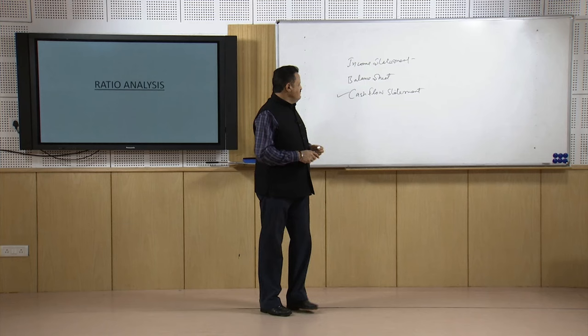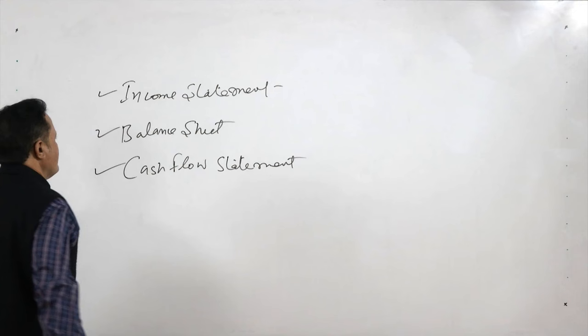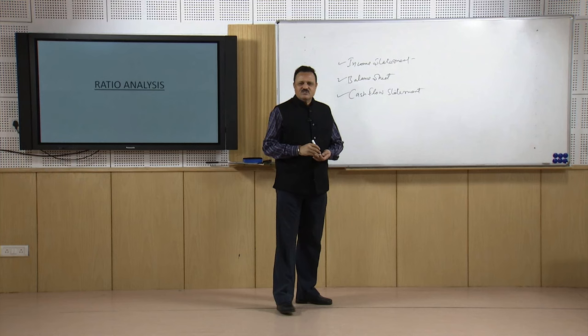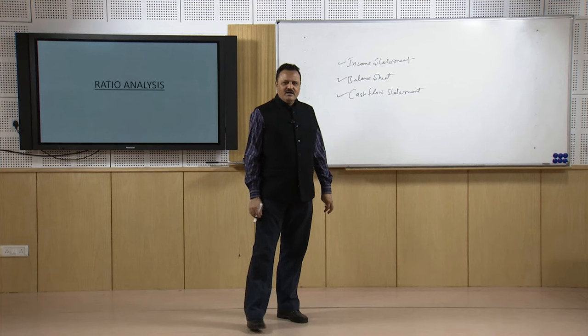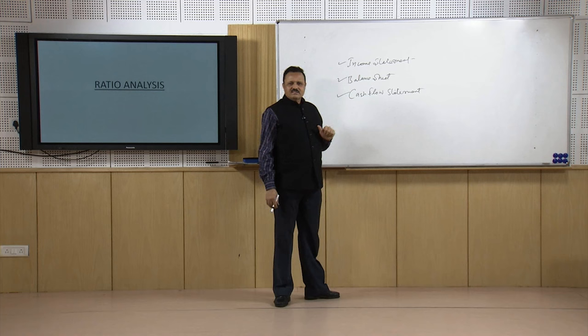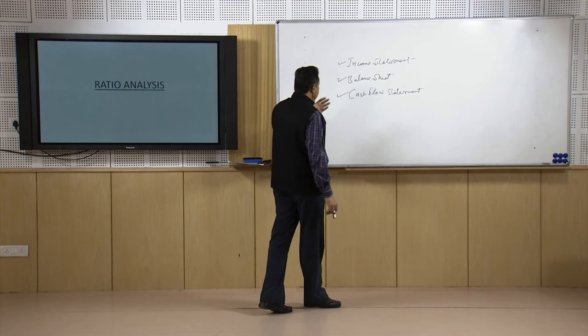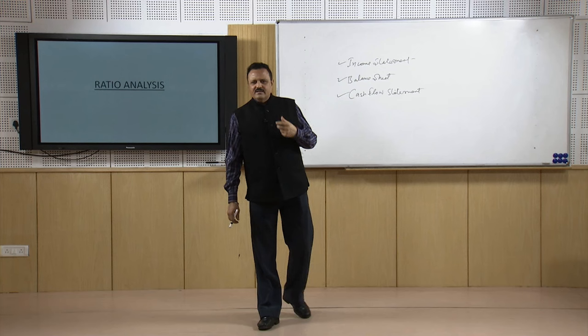The cash flow statement is prepared from the income statement and balance sheet. So we have learned the two primary statements — income statement and balance sheet — which are prepared from the primary records. As far as the third statement is concerned, it is better to learn it under financial statement analysis rather than along with the income statement and balance sheet.